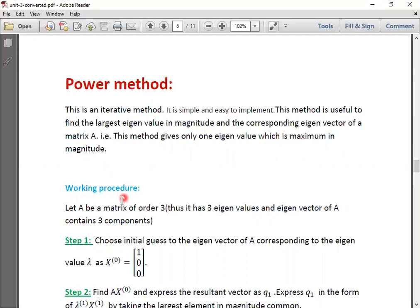Let us see its working procedure. For our convenience, I am taking A as a 3 by 3 matrix. It will have 3 eigenvalues. It is very clear to us. Then the eigenvector of A will be containing 3 components as the order of the matrix is 3. If the matrix A is of order n, then eigenvector X will contain n components.